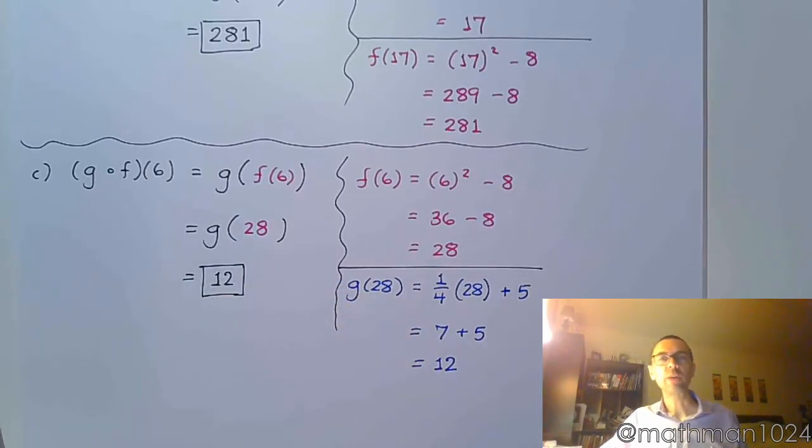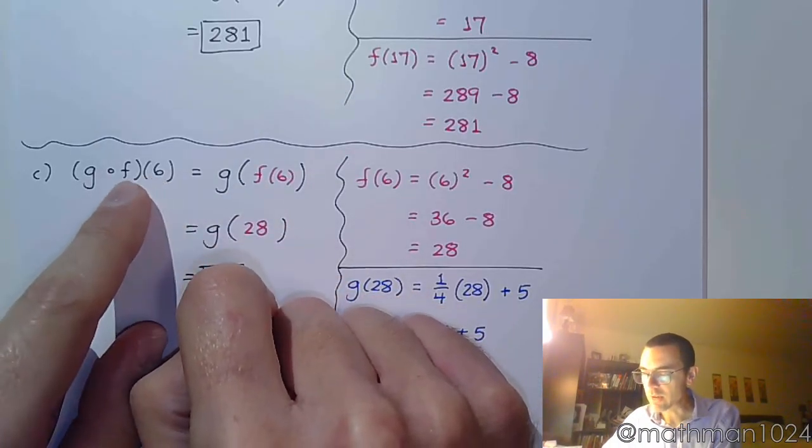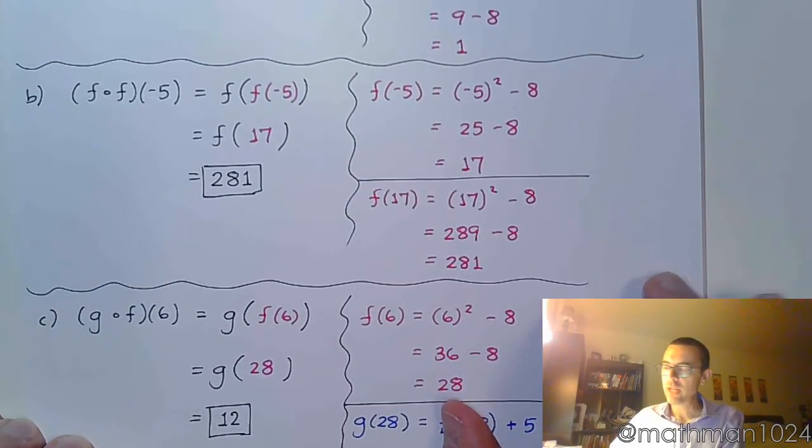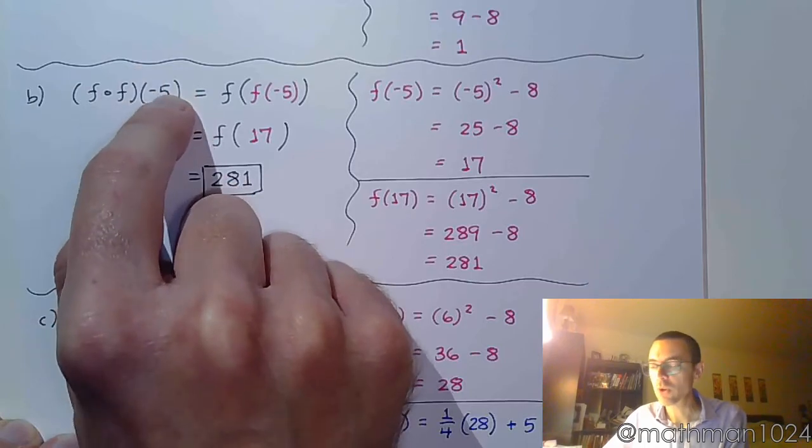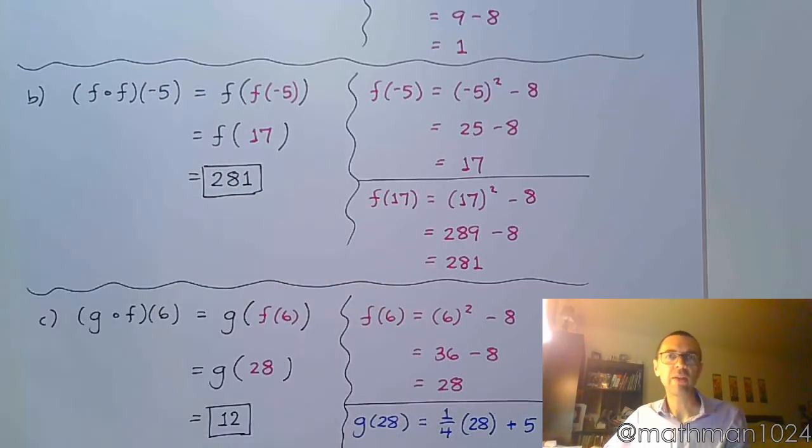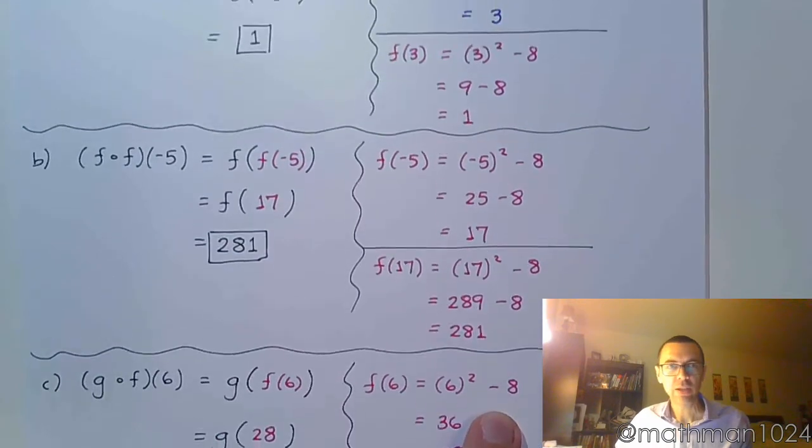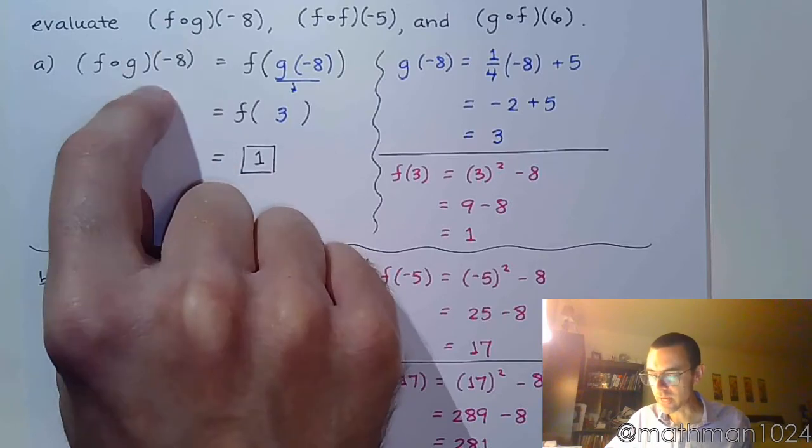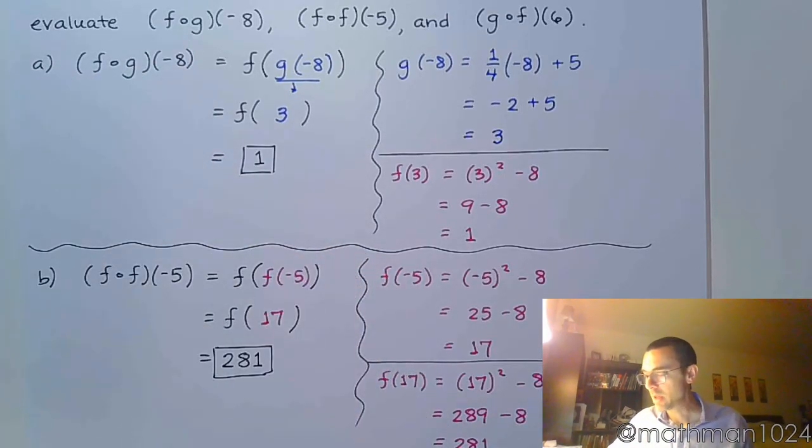So in each of these problems, we're doing the same thing. You just have to figure out which piece is going to be evaluated first. Right. And once you do that, then you take the answer and you plug it into the other function. So here, 6 goes into f first, and then that answer goes into g. In the previous example, negative 5 goes into f. That answer goes back into f. Right. And that finishes the problem. And the first problem, you plug negative 8 into g, and you took that answer and you plugged it into f. All right. So hit the homework. See what you can come up with. And I bet you'll be able to get hundreds in no time at all.